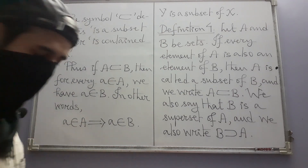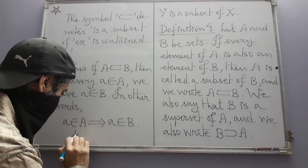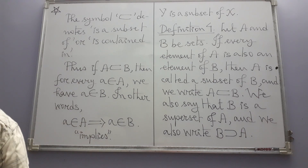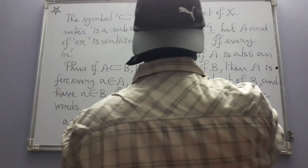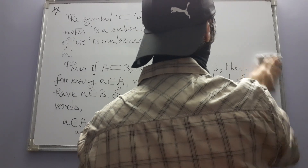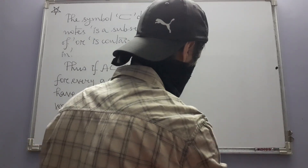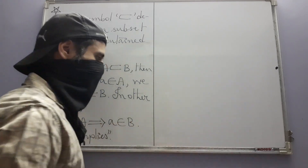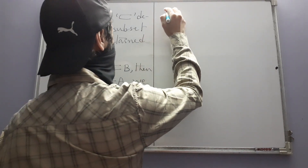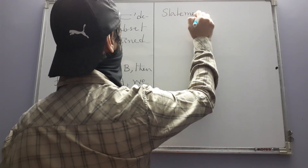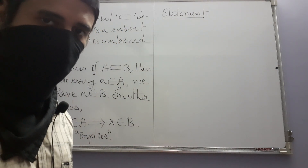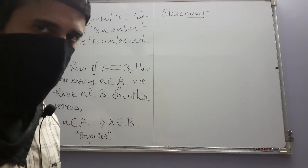This symbol is called 'implies.' We are going to see, somewhat briefly, what 'implies' even means. Because we are going to talk about mathematical logic, let us first be clear about something: what is a statement? A statement is a sentence which is either true or false.